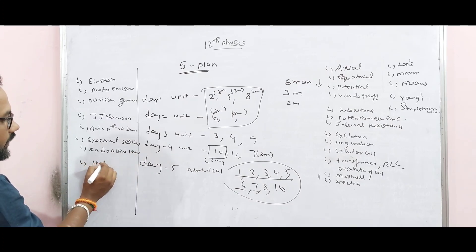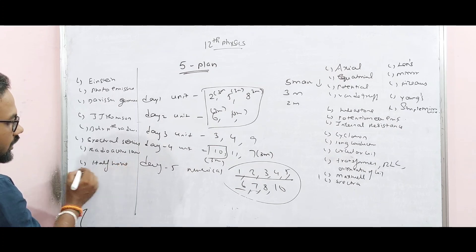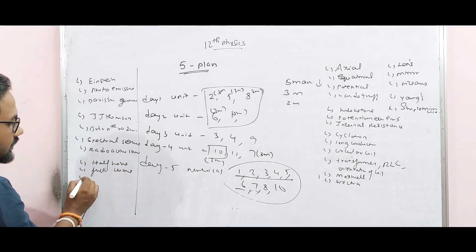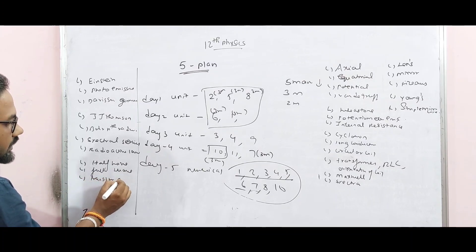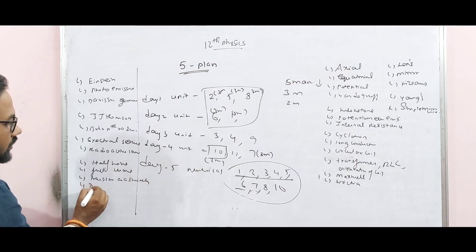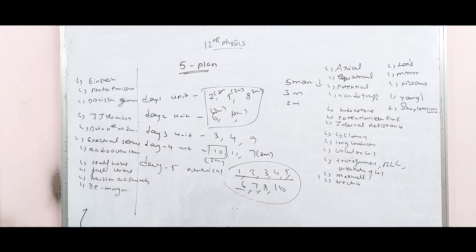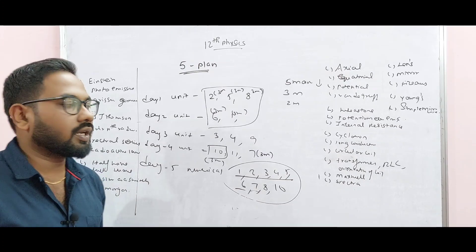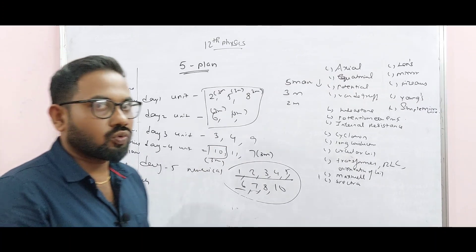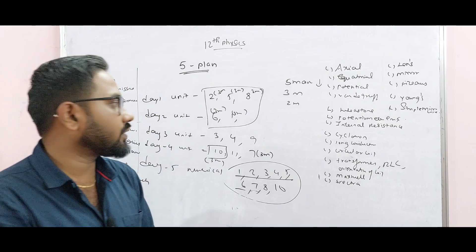Half-wave rectifier. Full-wave rectifier. Transistor as a switch. This is the 5 mark at the top of the unit — these will be 90% of the exam. 3 mark important, 2 mark important — discussion box.